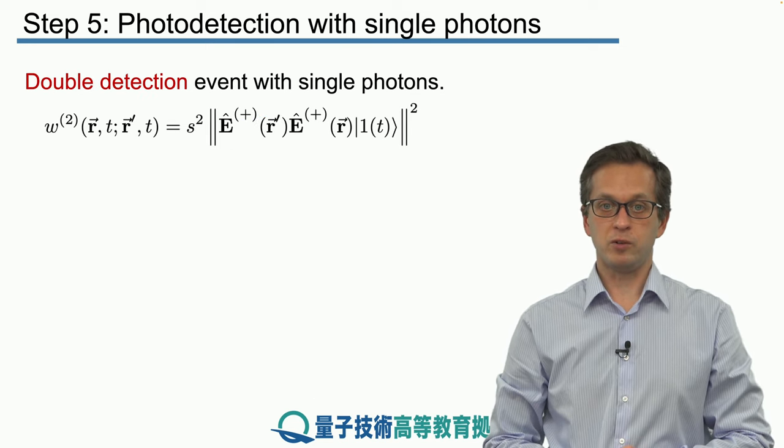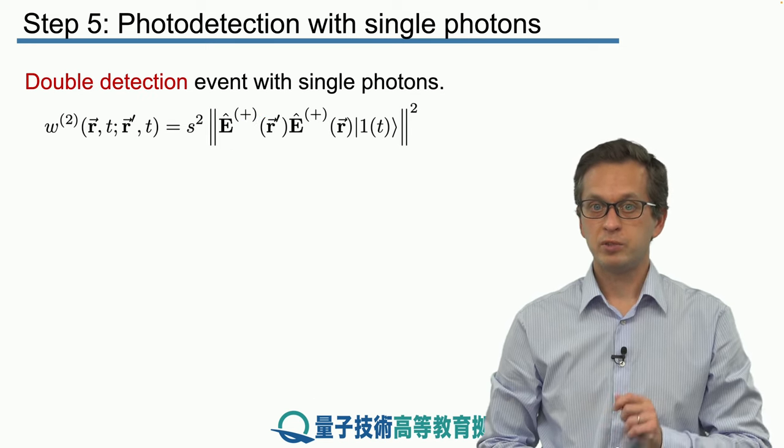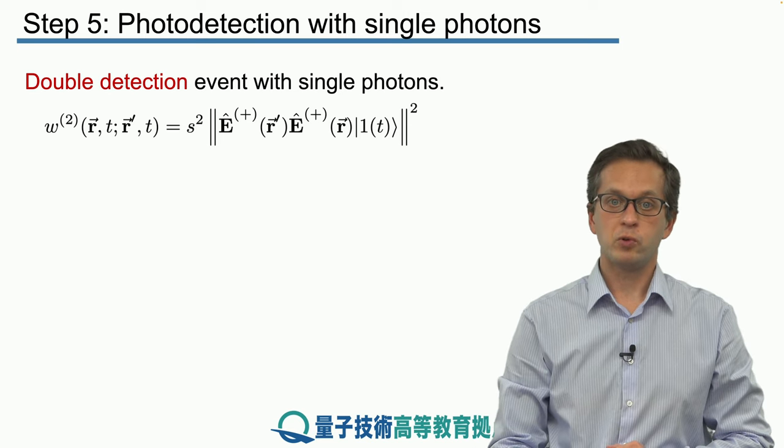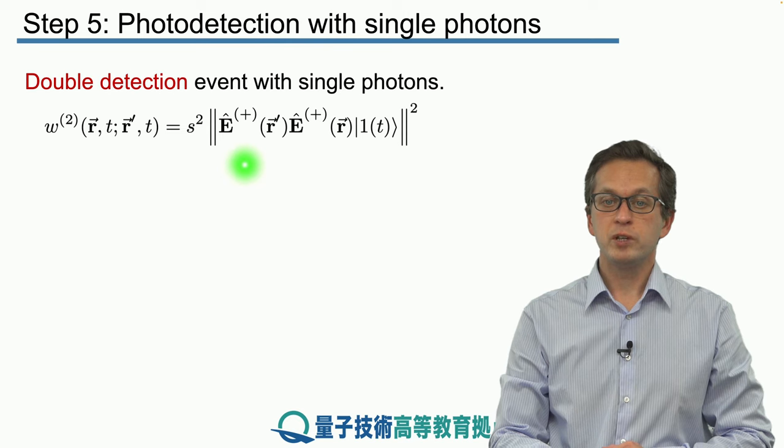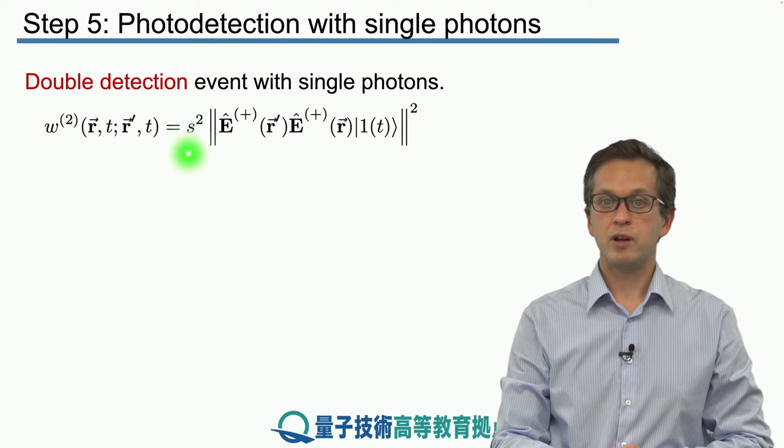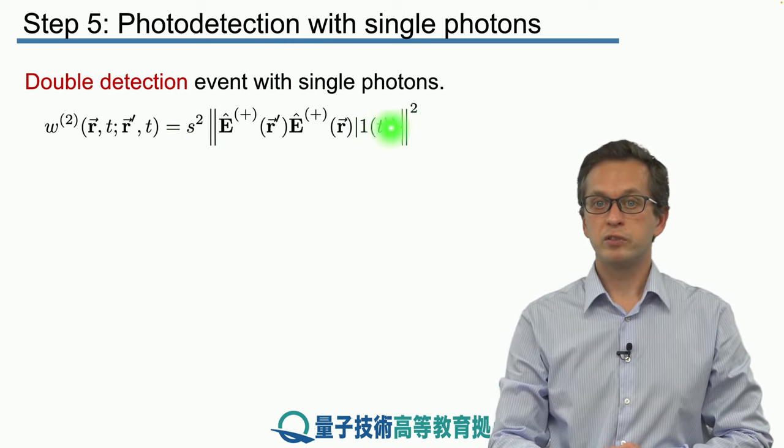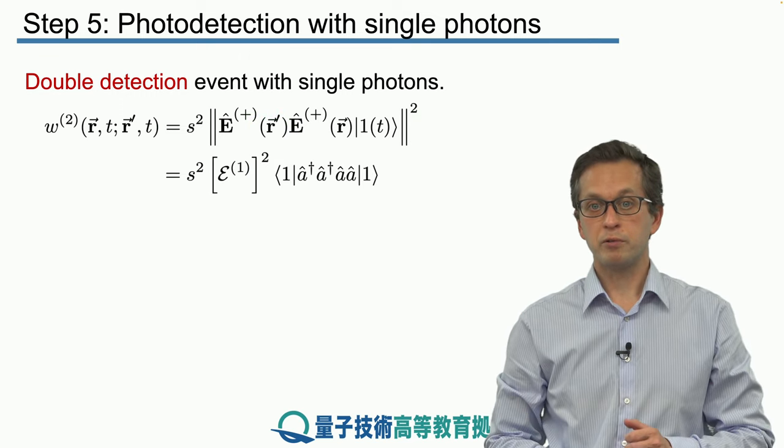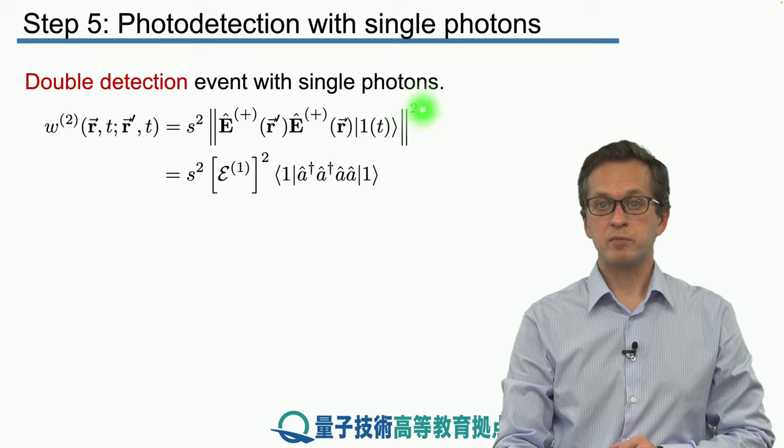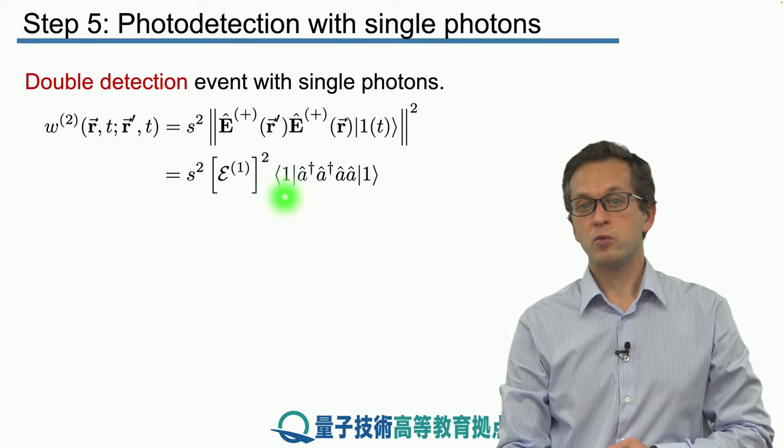Now we can ask another question. What's the probability of the double detection event? Well, we have to compute the w2 given by this following expression. Assuming that both detectors have the same sensitivity, we write s squared times the modulus of the following vector. And if we go through the calculation, after some simplifications of all the exponentials, we get the following.